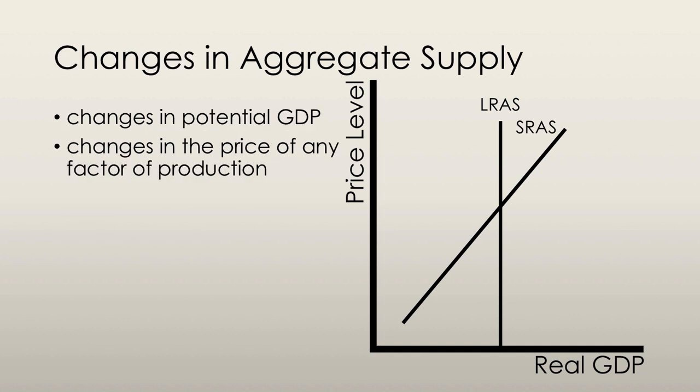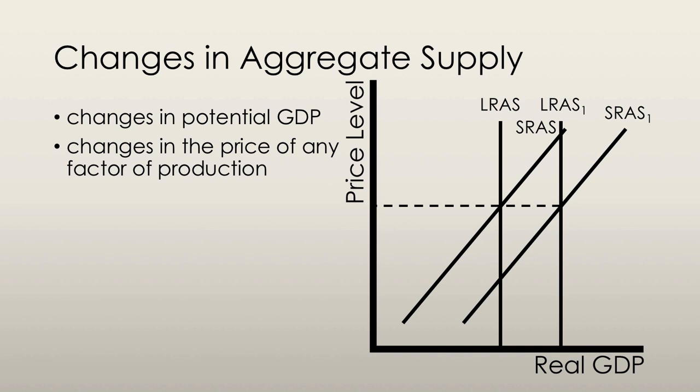An increase in potential GDP will bring about an equivalent increase in short-run aggregate supply, and we're going to be assuming that the full employment price level remains the same. Potential GDP might increase due to an increase in the full employment quantity of labor, or if the quantity of capital increases — including human capital. Advances in technology also increase potential GDP, because technology enables firms to produce more goods and services from any given amount of factors of production, and it's considered the most important source of increased production.